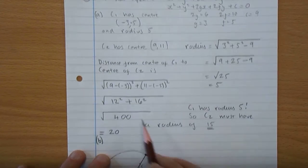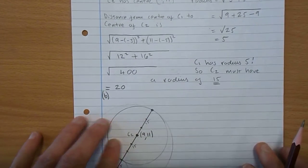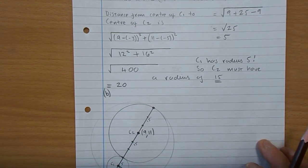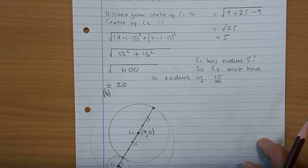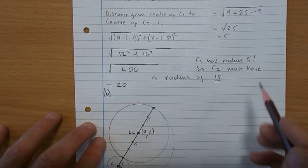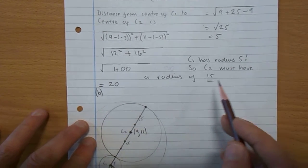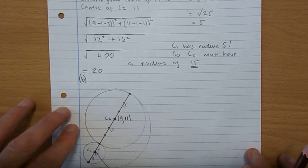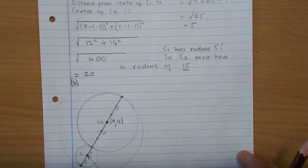Square them. Calculate it out. Gives you 400. So the distance between the centres of C1 and C2 is 20. And with C1 having a radius of 5, that leaves a radius of 15 for circle C2.